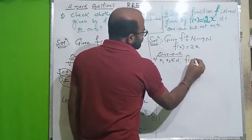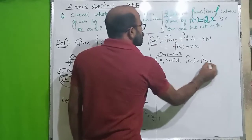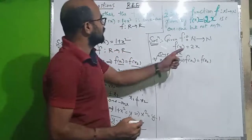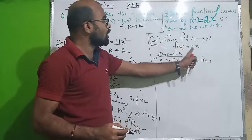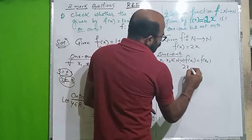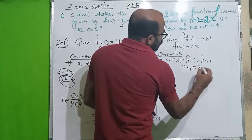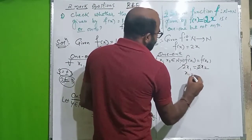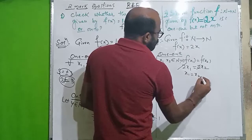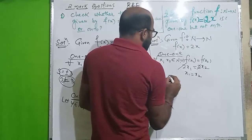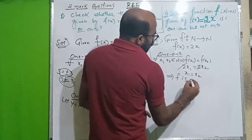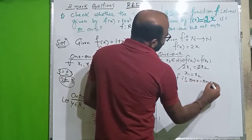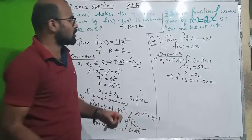f of x1 equals f of x2 means 2x1 equals 2x2. Cancelling the 2 from both sides gives x1 equals x2. That implies f is one-one. So f is one-one.